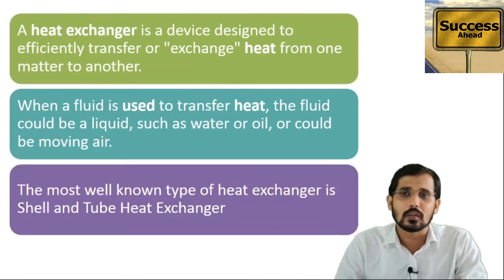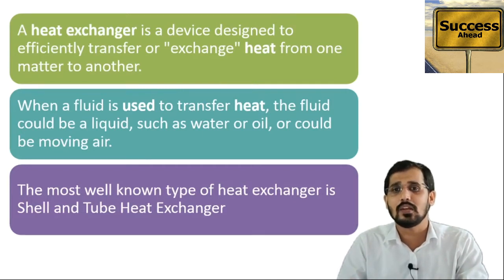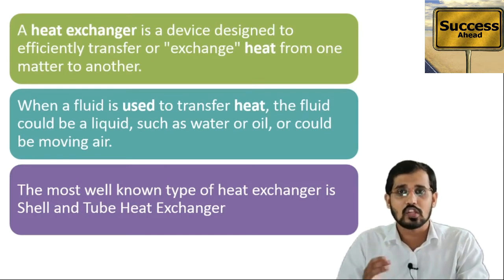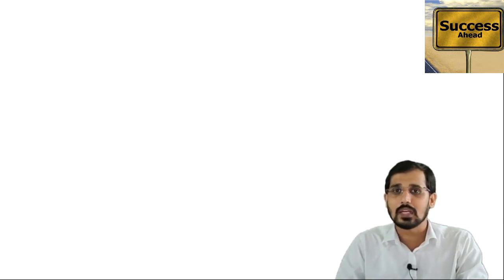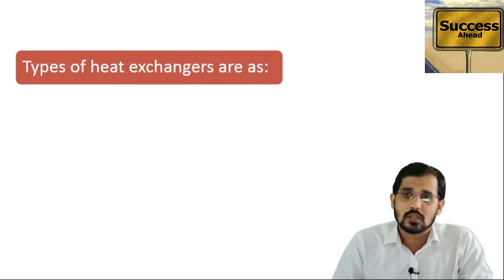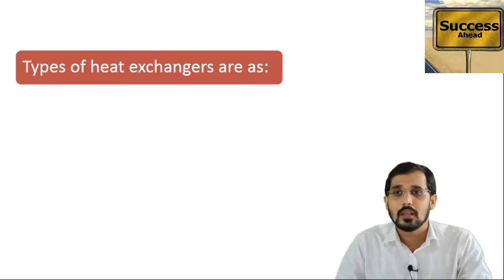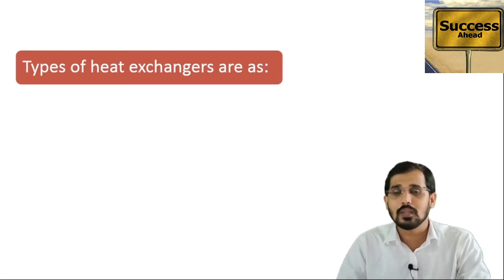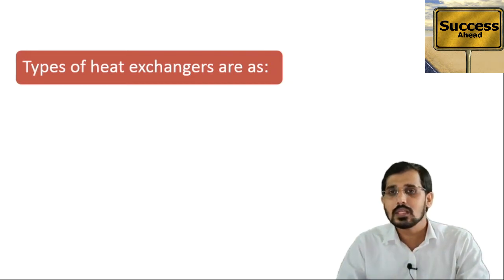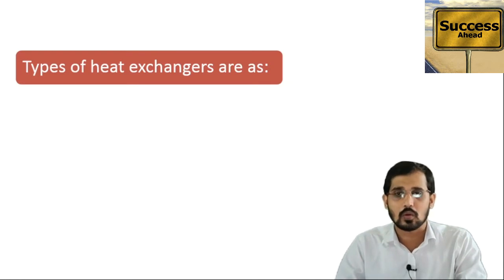The best example of a heat exchanger is the shell and tube heat exchanger, which is used in many industries. Before showing the figure, I will quickly explain the types of heat exchangers. There are various types such as lathe type, double pipe, and fin type. In this lecture, I will explain heat exchangers based on flow patterns. There are three flow patterns: the first is co-current, the second is counter current, and the third is cross current.